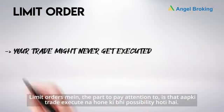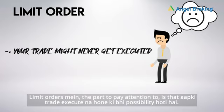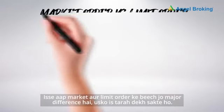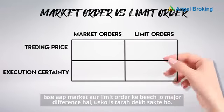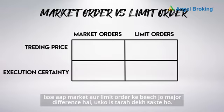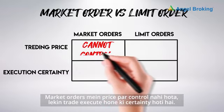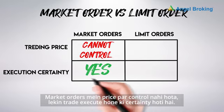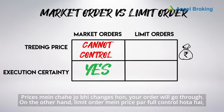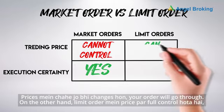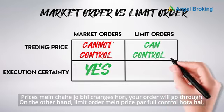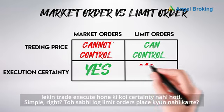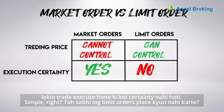With limit orders, the important point to note is that there is also a possibility that your trade may not execute at all. This highlights the major difference between market and limit orders. In market orders, you have no control over price, but there is certainty that the trade will execute — whatever price changes occur, your order will go through. On the other hand, with a limit order, you have full control over price, but there is no certainty that the trade will execute.